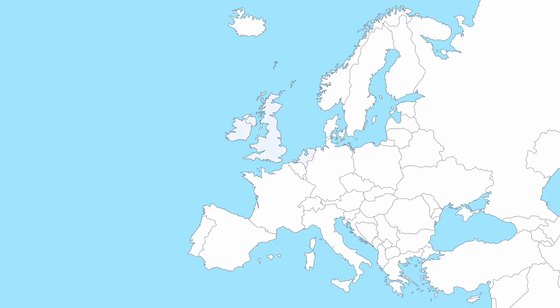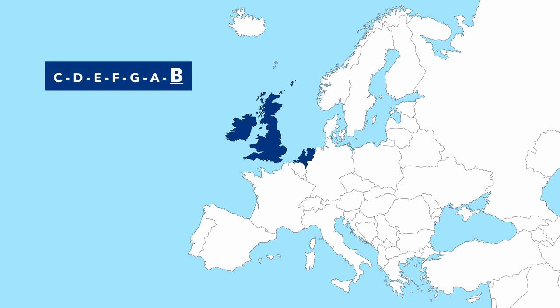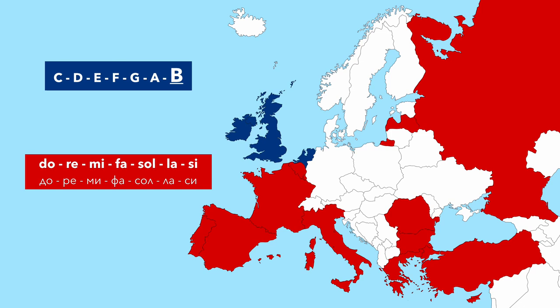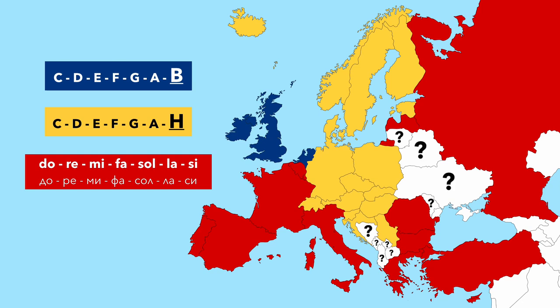Here's a map of Europe. As you can see, in only a few countries the note following A is called B. In most countries, you either use the solmization syllables, or follow A with H and call its flattened version B. Please use the comment section to help me fill the gaps here.